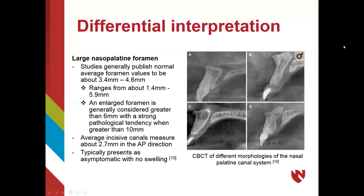A large nasal palatine foramen of non-pathological origin is a differential diagnosis that must be considered. On average, incisive foramina measure about 3.4 to 4.6 millimeters, with ranges from 1.4 to 5.9 millimeters being generally accepted. Literature reports an incisive foramina greater than 6 millimeters as enlarged, and 10 millimeters or greater as indicating a strong pathological predilection. Incisive canals average about 2.7 millimeters in the anterior-posterior direction. The CBCT radiograph on the right shows four different non-pathological bony morphologies of the nasal palatine canal system.